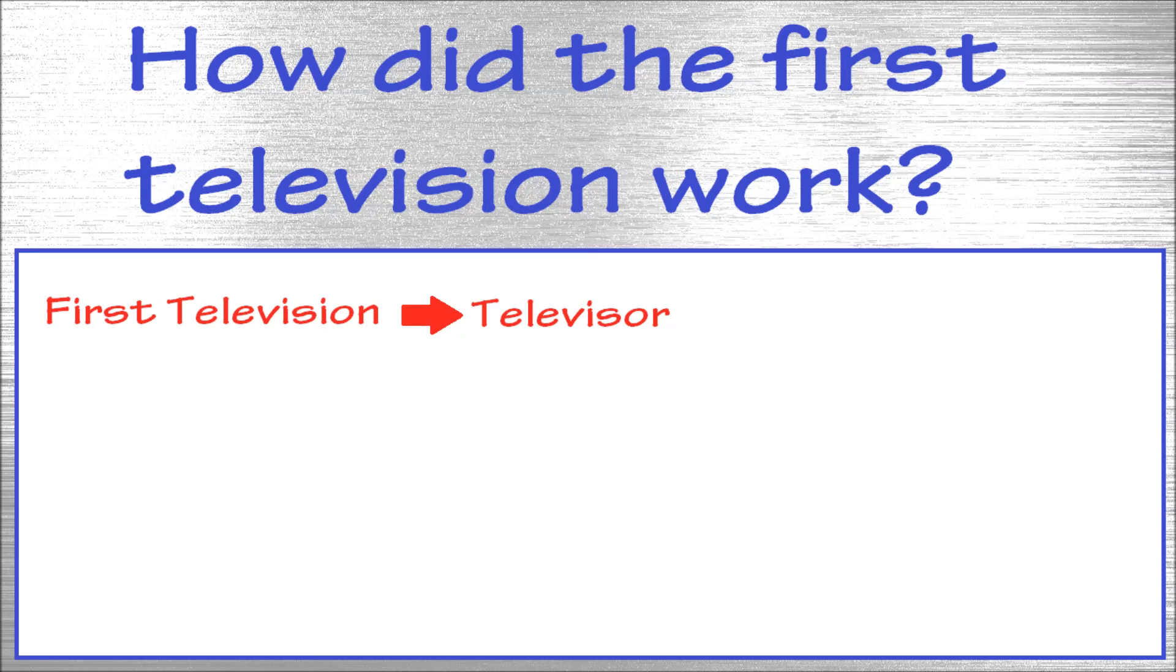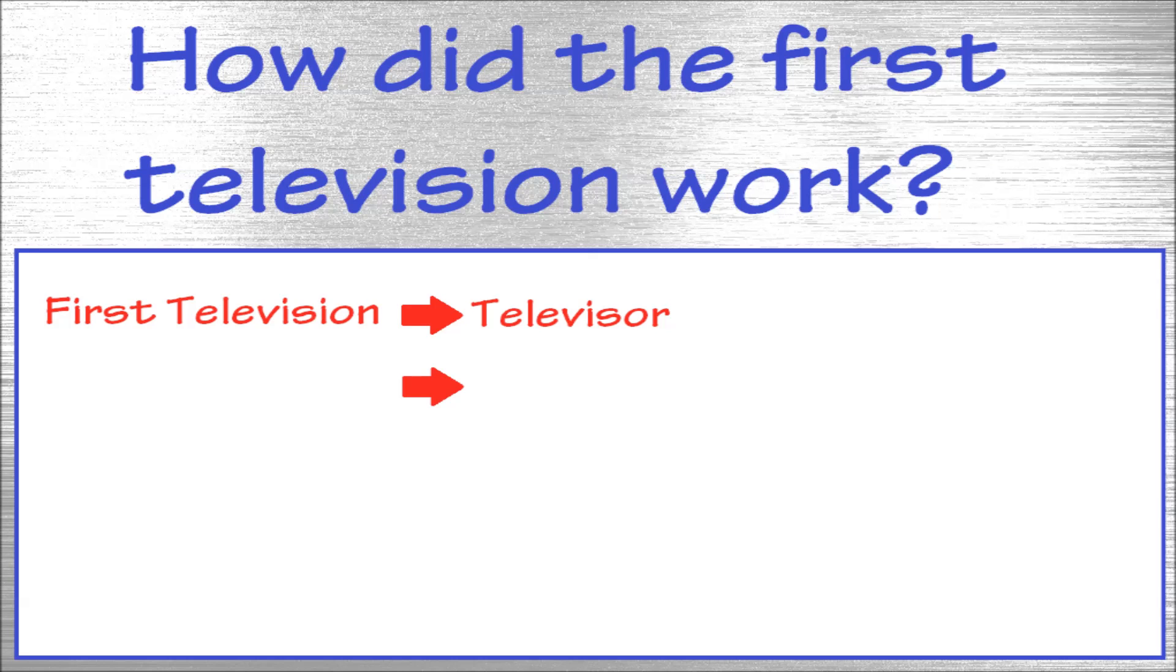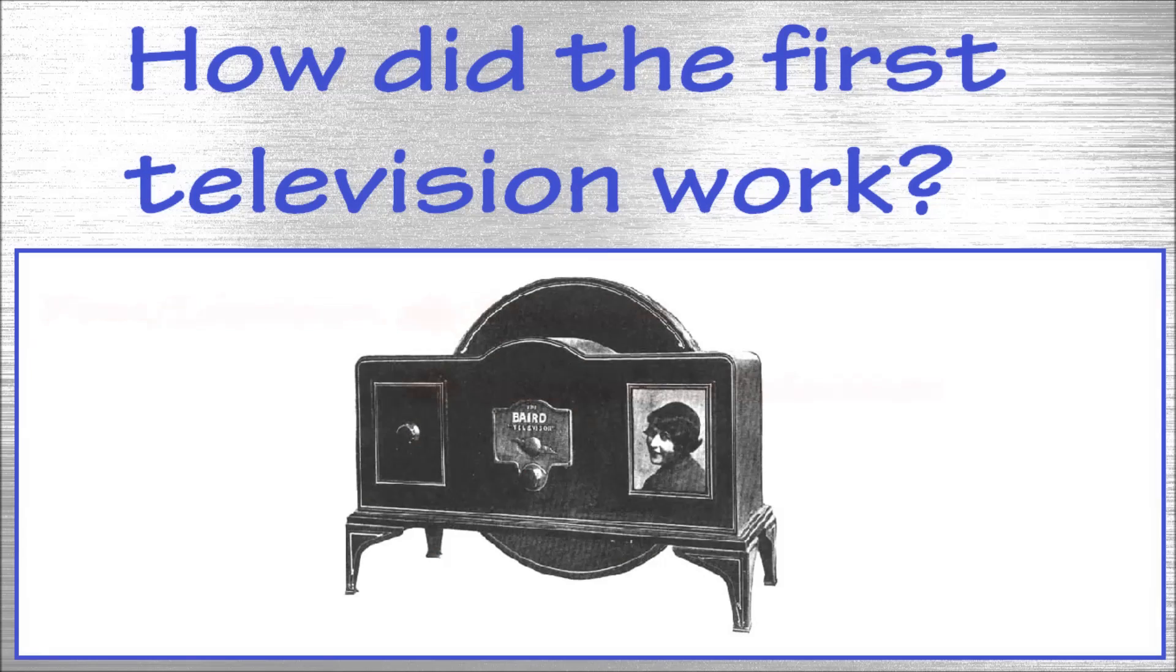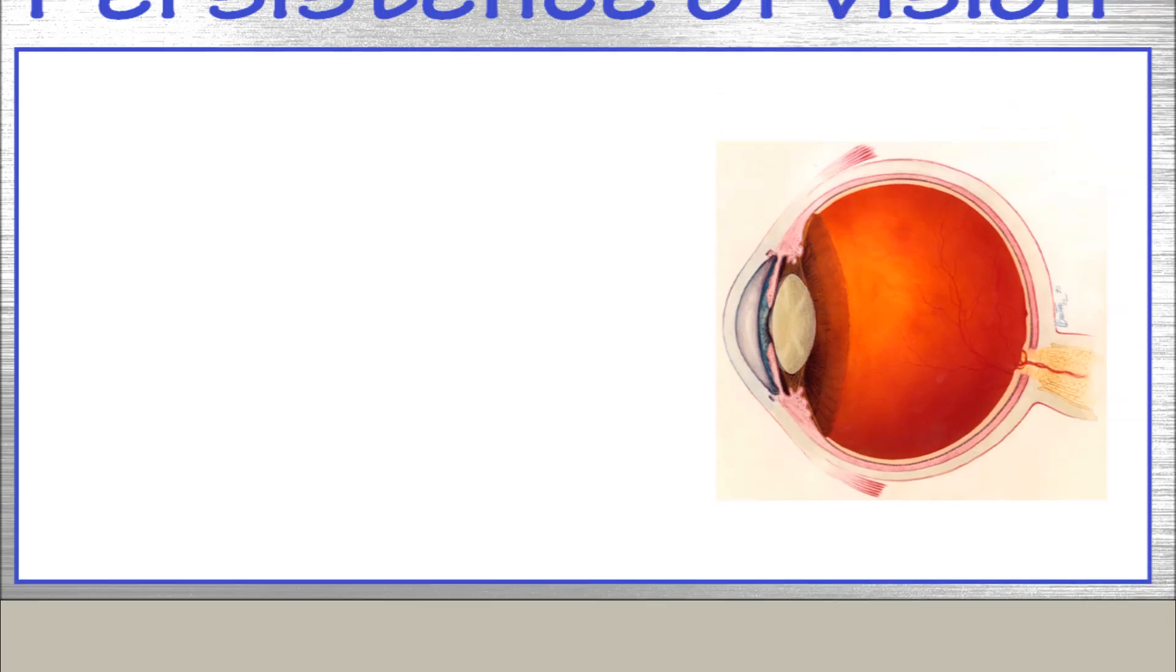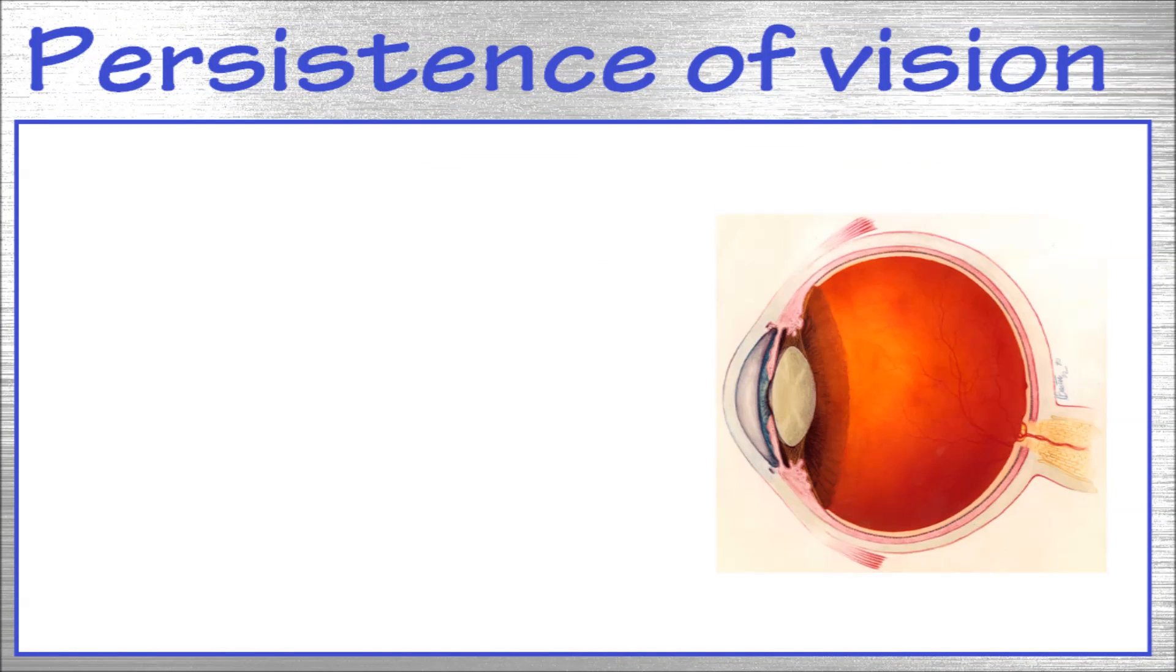While modern screens rely on electronics to create an image, the first television was mostly mechanical. Before we get into the design and principles, let's see what makes it possible to create moving pictures. It all comes down to the ability of the eye to capture an image for a split second.